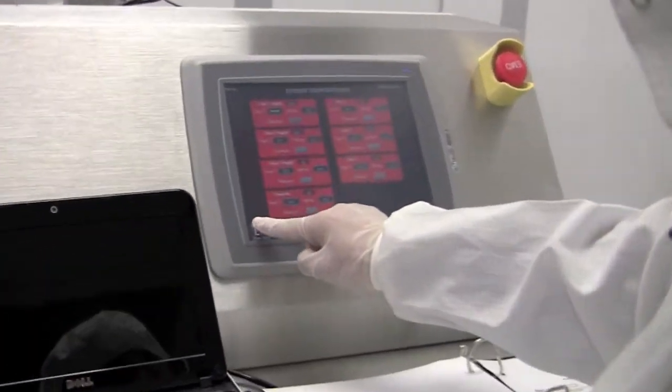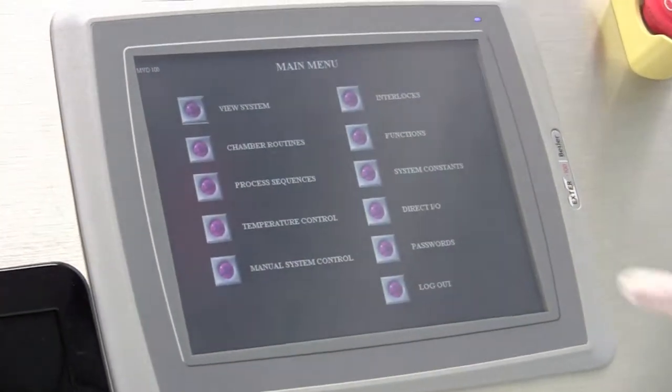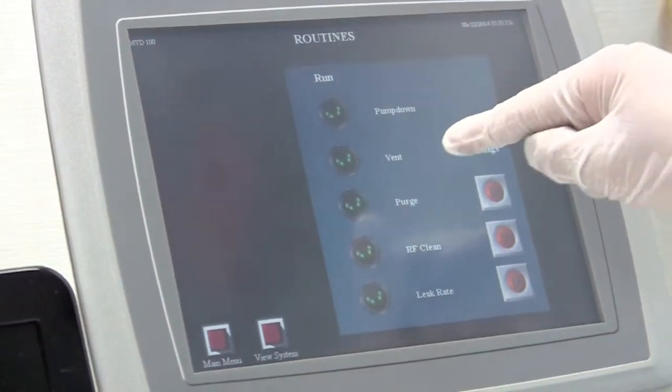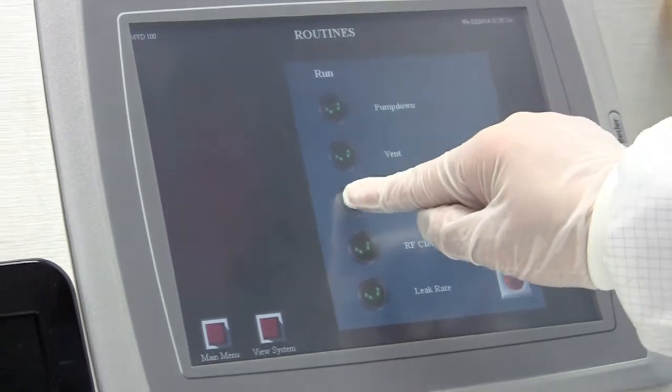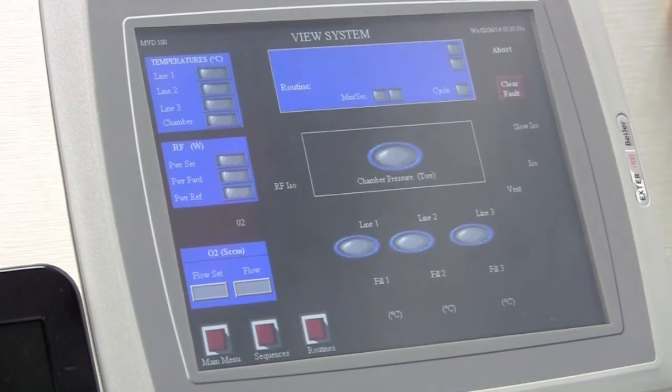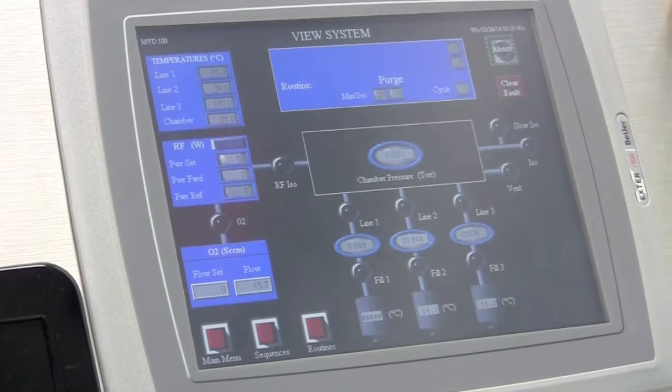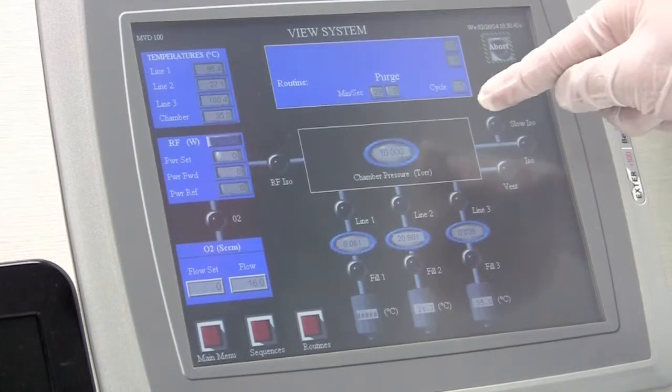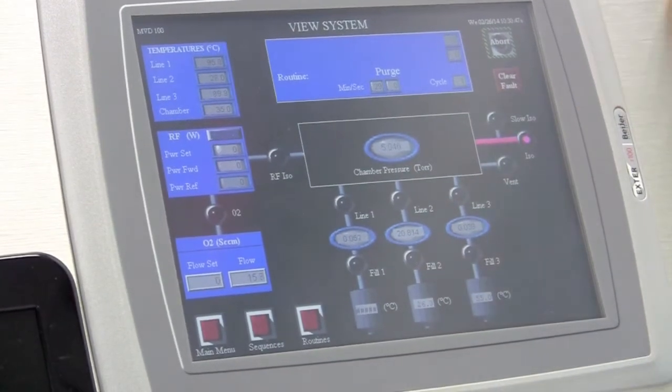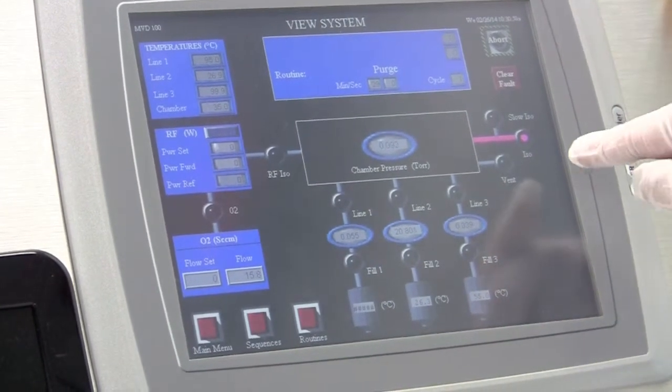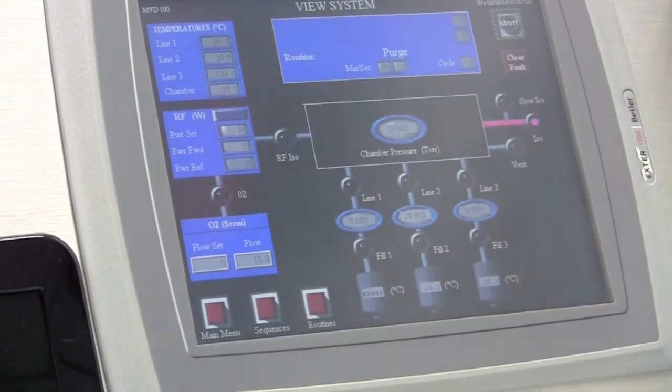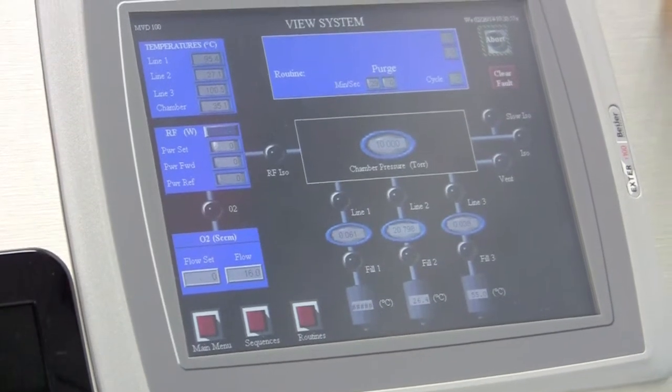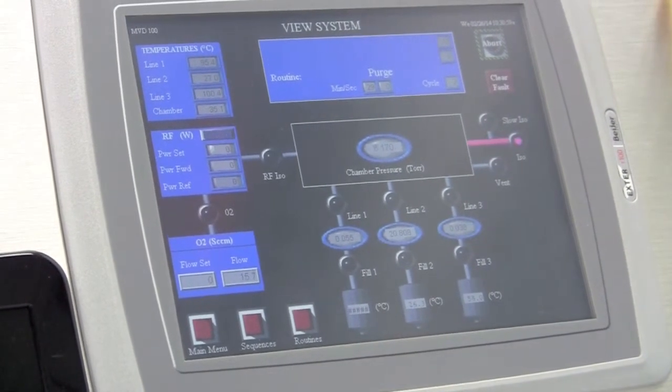So we touch main menu and touch chamber routines. Before we vent the chamber, we need to purge the chamber first. Now you see the nitrogen comes in and is pumped out. And it will come in again and pumped out again. By doing these 5 cycles, the purge process is completed.